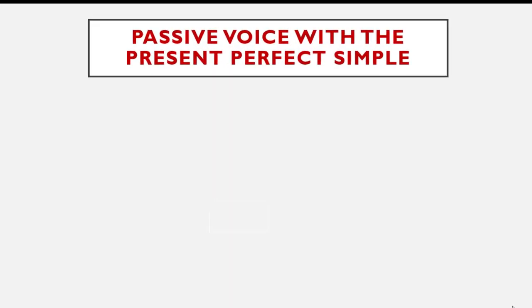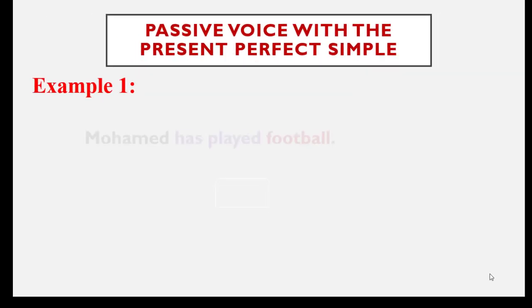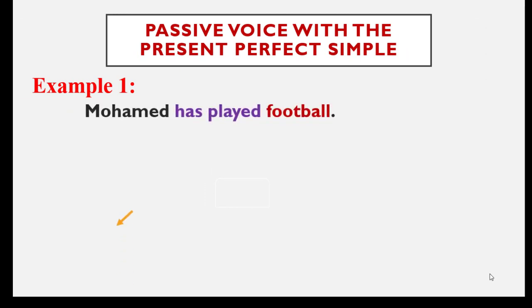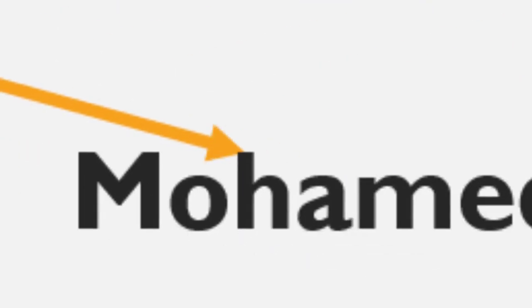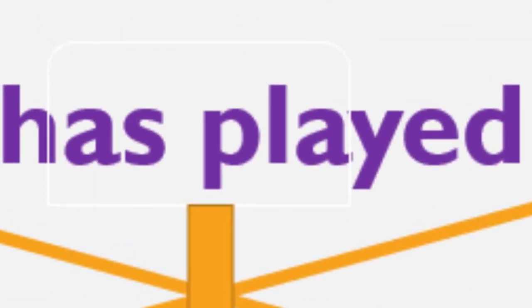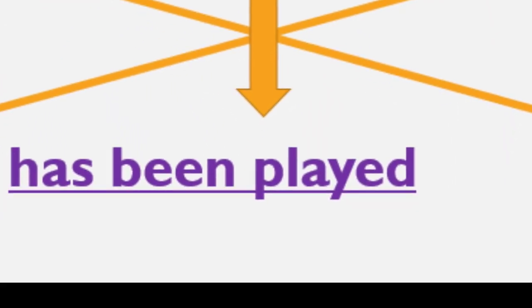Now let's go to the passive voice with the present perfect simple. Example: Mohammed has played football. Mohammed is the subject, has played is the verb in the present perfect simple, and football is the object. Football becomes the subject and Mohammed becomes the object. Football is singular so we write has been — notice that been is inserted between has and the past participle. The answer is: football has been played by Mohammed.